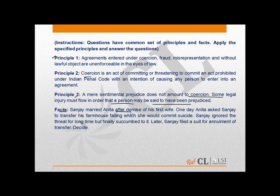Facts: Sanjay married Anita after the demise of his first wife. One day, Anita asked Sanjay to transfer his farmhouse, failing which she would commit suicide. Sanjay ignored the threat for a long time but finally succumbed to it. Later, Sanjay filed a suit for annulment of the transfer.